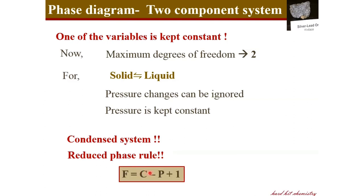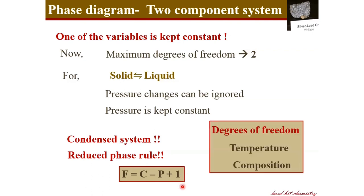The actual phase rule is F = C − P + 2, where the two parameters are temperature and pressure. For the reduced phase rule, assuming the system to be a condensed system, we remove pressure to get F = C − P + 1. That is the reduced phase rule, and for the two component system we will apply this reduced phase rule, so the parameters needed to describe the system are temperature and composition.